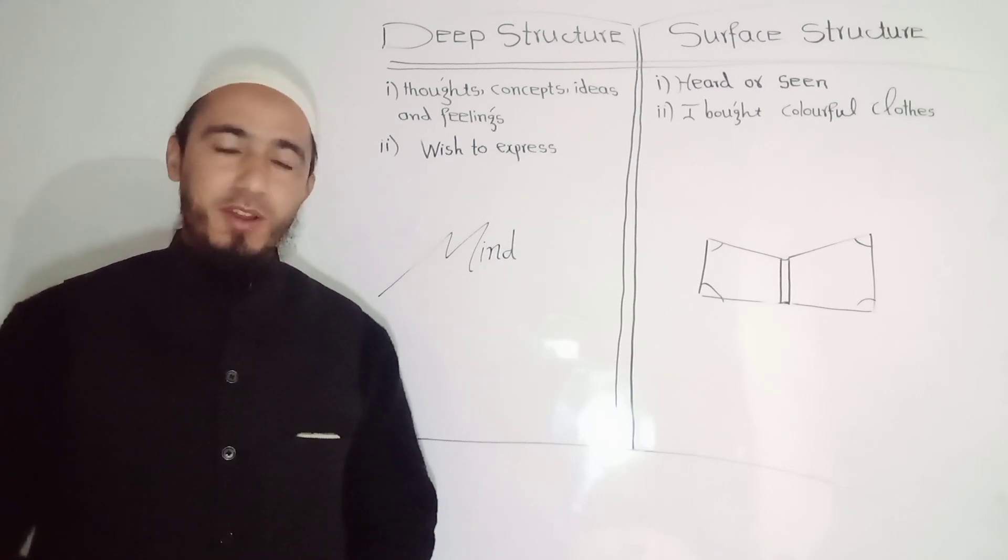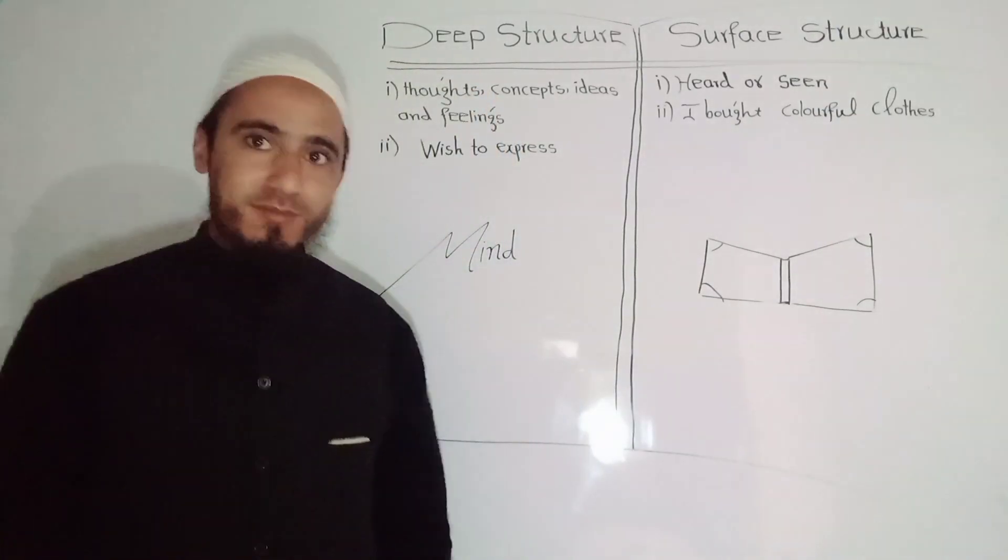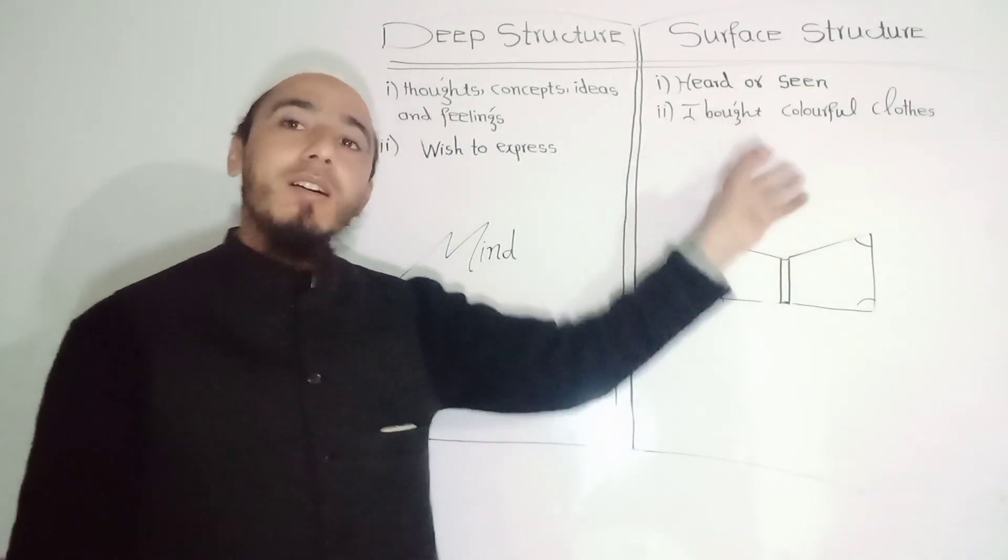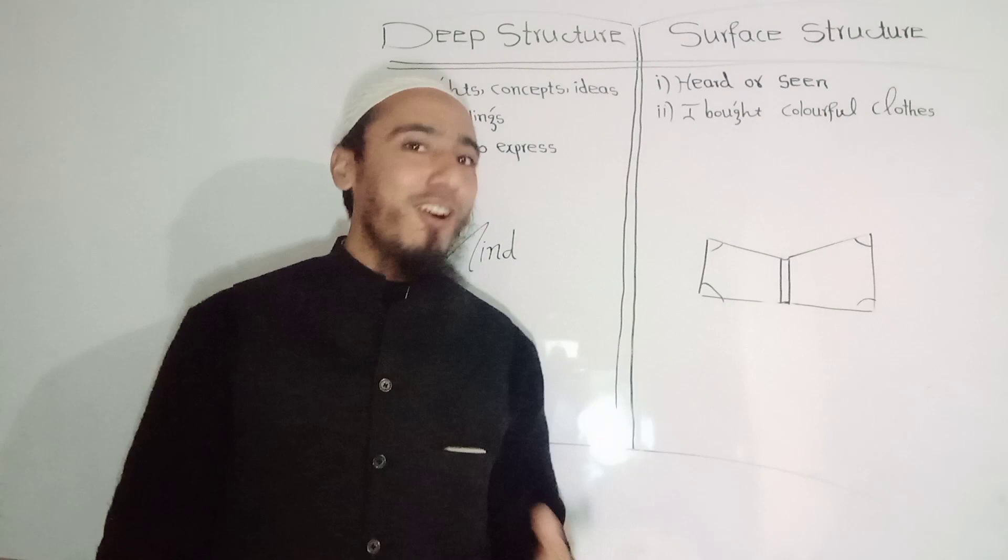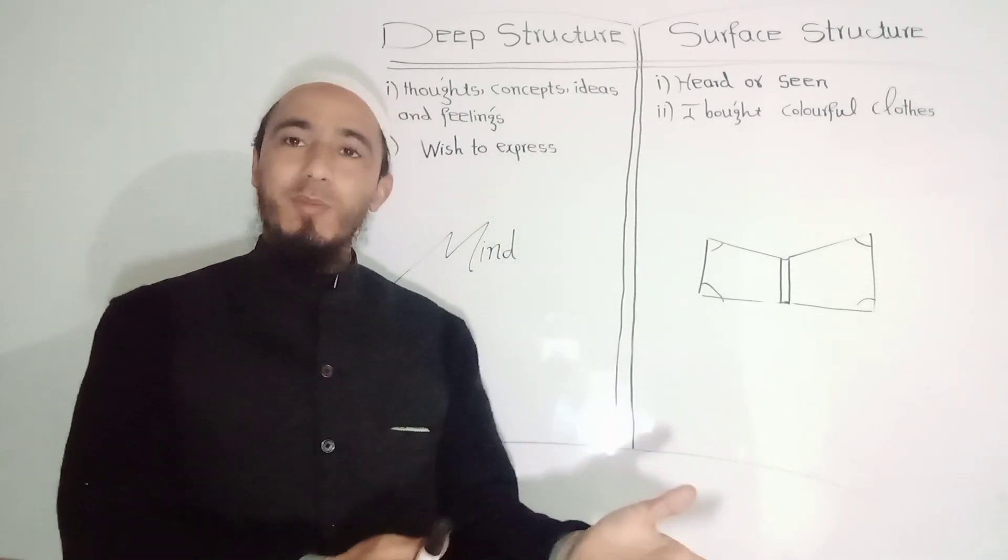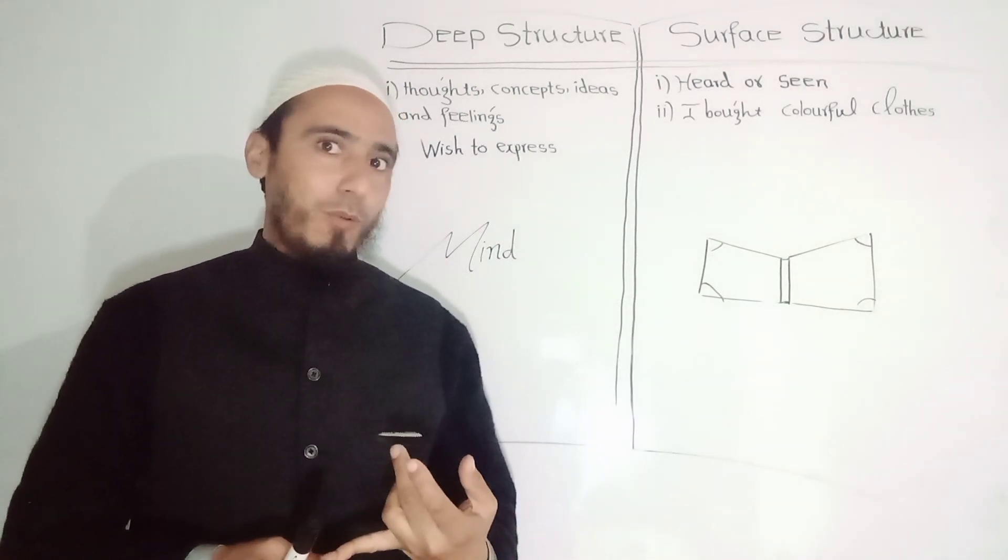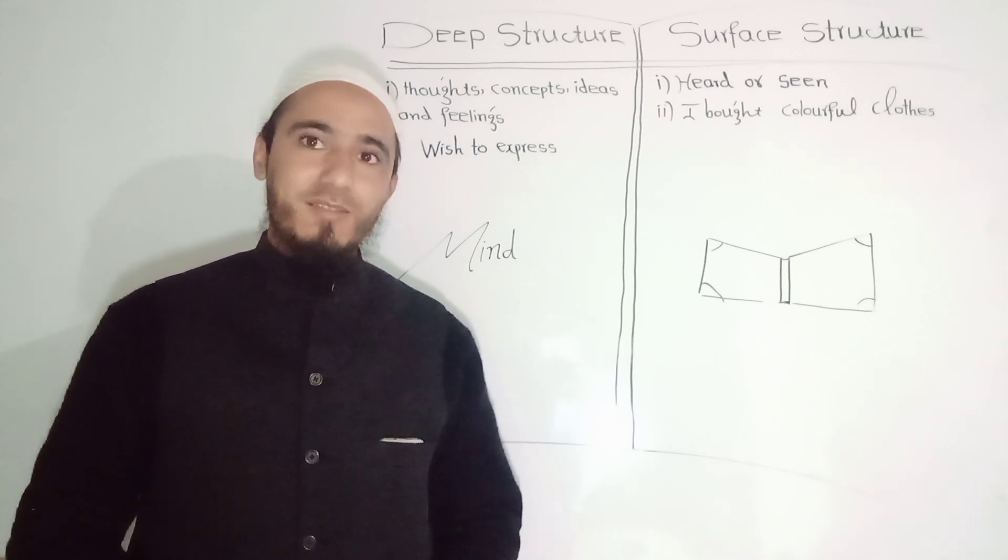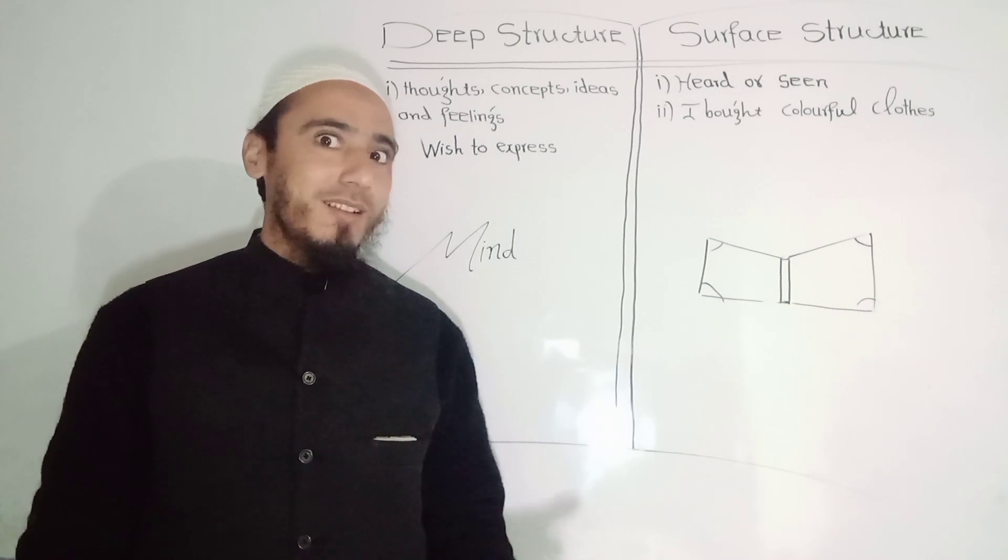For example, if you say to someone, 'I bought colorful clothes,' this is surface structure because it can be seen and heard. However, when you say 'I bought colorful clothes,' the listeners will start thinking: When did he buy the clothes? How did he buy the clothes? Where did he go to buy the clothes? And what kind of colors - white, black, etc.?